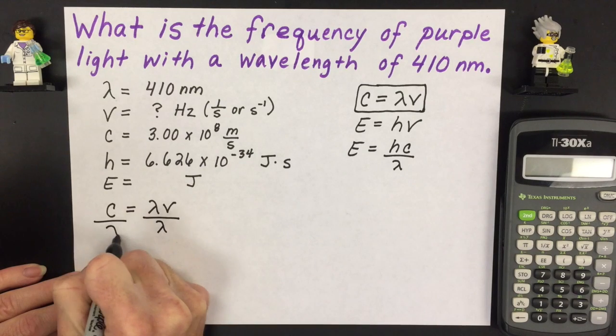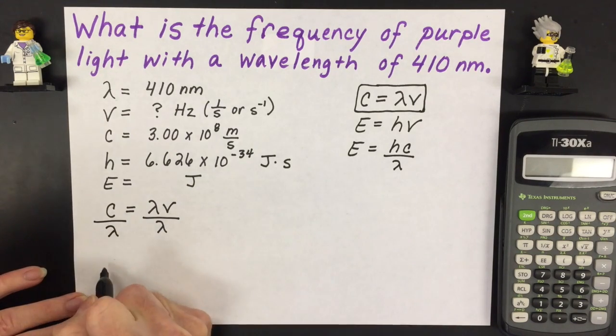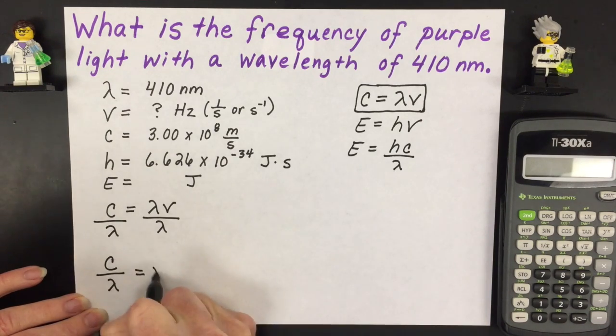So I'm going to divide both sides by lambda and I get a new equation that says lambda on the bottom and speed of light on the top is equal to frequency.